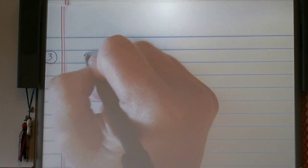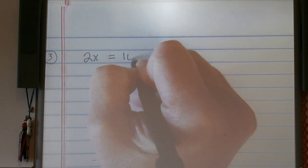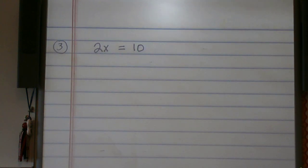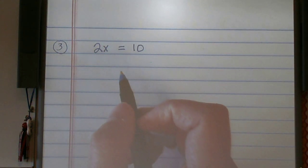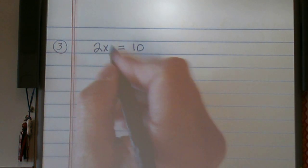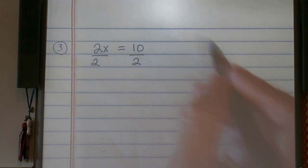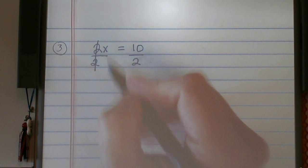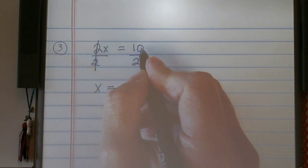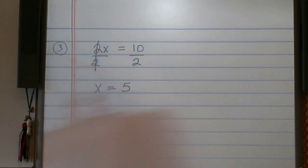Let's do one with multiplication. 2x equals 10. Now, we want to get x by itself. And right now, x is being multiplied by 2. So I want to isolate x. To get rid of multiplication, we divide. So I'm going to divide both sides by 2 because 2 divided by 2 is 1. That will give me x equals, and 10 divided by 2 is 5.